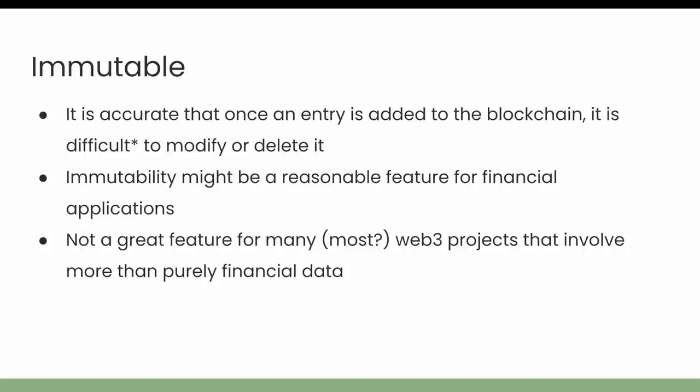Moving on, we'll talk about immutability. It is accurate that once an entry is added to the blockchain, it is difficult to modify or delete it. But there is an asterisk after 'difficult' because it is not impossible. In fact, in the past it has happened where blockchains have gone back and basically rewritten history to undo a transaction — something that would not be possible in a truly immutable system.